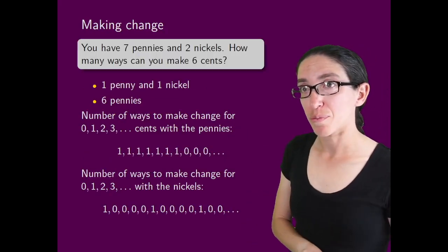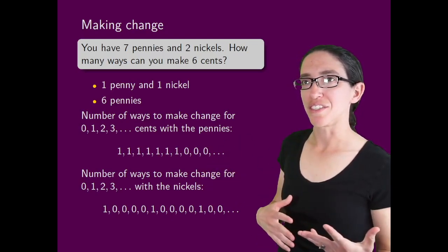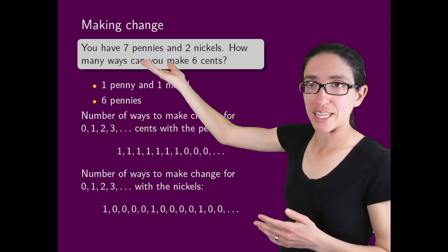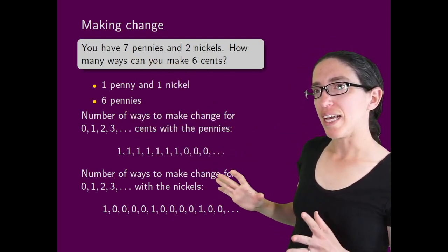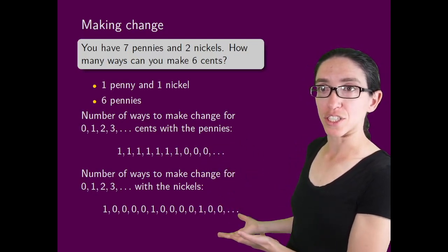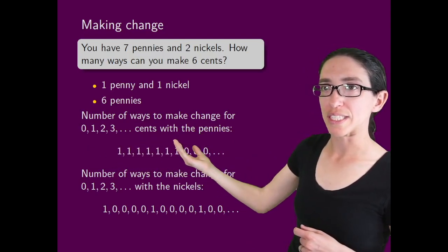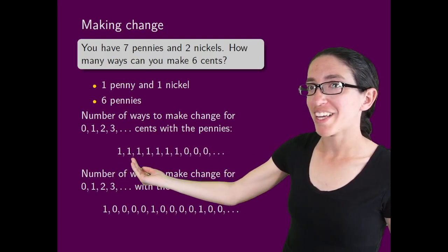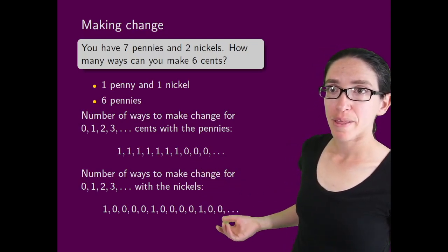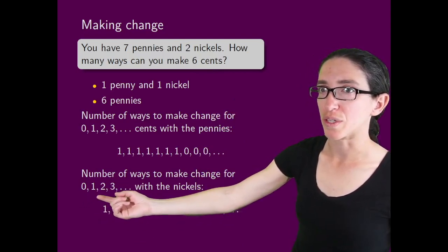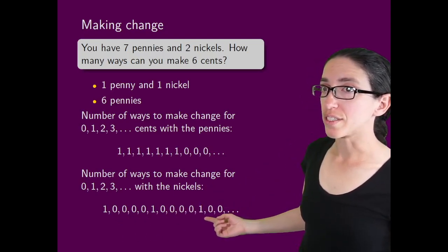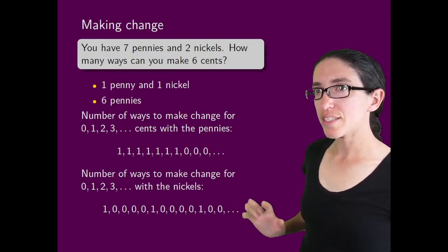Here's a concrete example of what we can do with polynomial generating functions. Say you have 7 pennies and 2 nickels — how many ways can you make 6 cents? We can just write them down: either 1 penny and 1 nickel (since a nickel is worth 5 cents), or just 6 pennies (since you have 7 pennies). Now let's break this down. If we wanted to record how many ways you can make all numbers of cents, we can relate it to two existing sequences — just for the pennies and just for the nickels. The number of ways to make change for 0, 1, 2, 3 cents, etc. with the pennies is: use 1 penny, 2 pennies, 3 pennies, 4 pennies, etc., up until you get to more than 7 pennies, then there's no way to do it. And you only have 2 nickels: you can use 0 nickels for 0 cents, 1 nickel for 5 cents, or 2 nickels for 10 cents, and then it's all zero after that.